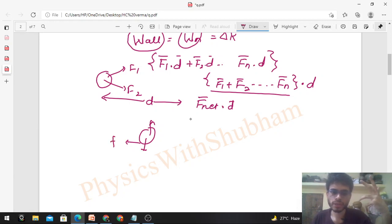Aur work done by the net force that is work done by the kinetic friction will be equal to change in kinetic energy which is minus of half into V square. Aur ye negative kya aare? Because displacement is opposite to the direction of friction. Friction opposes the relative motion.